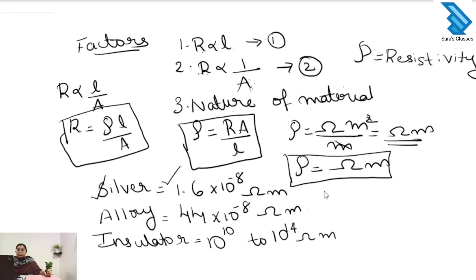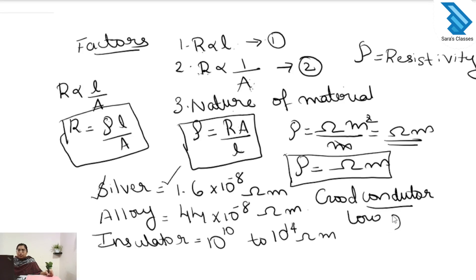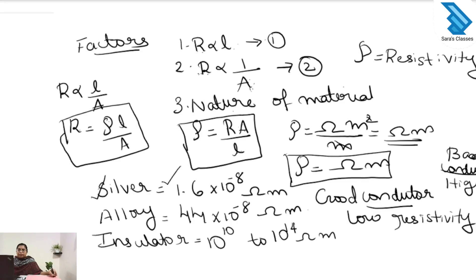Good conductor means low resistivity, and bad conductor means high resistivity. Here we can see that silver has the lowest resistivity, so silver is a good conductor of electricity.